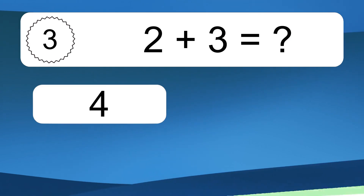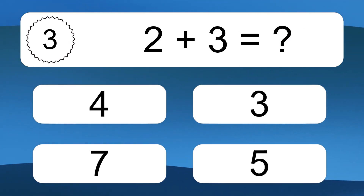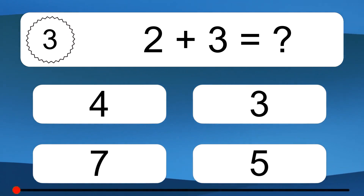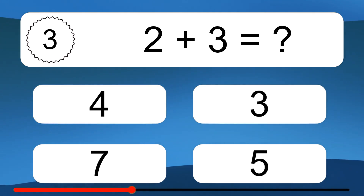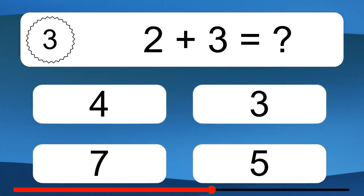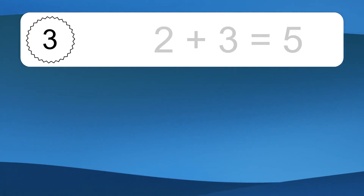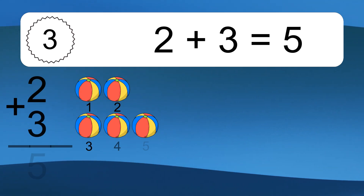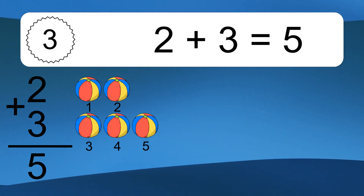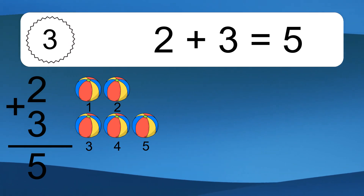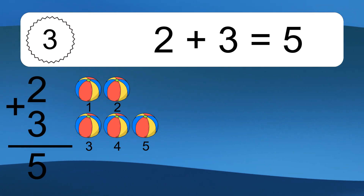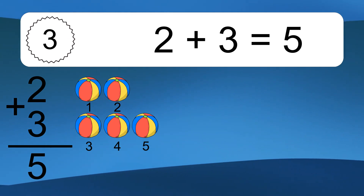2 plus 3 equals what? 2 plus 3 equals 5. Let's count it. 1, 2, 3, 4, 5.